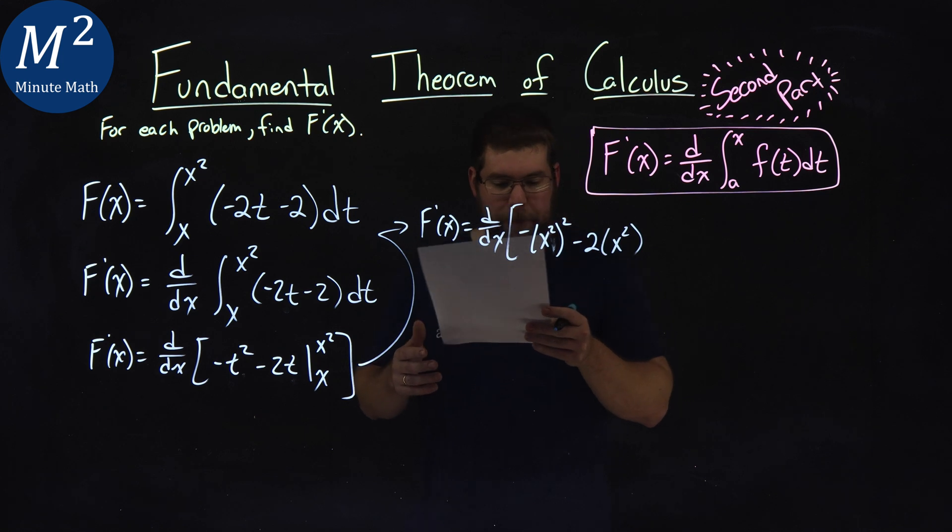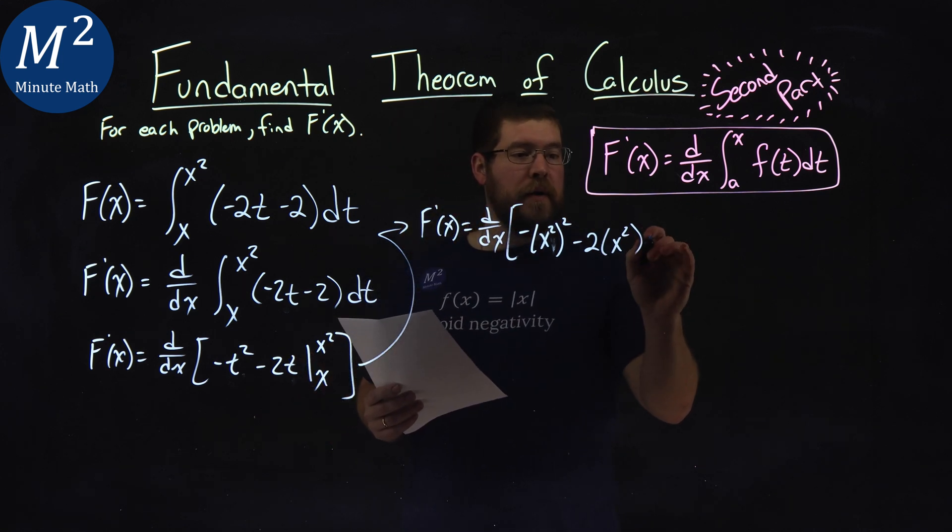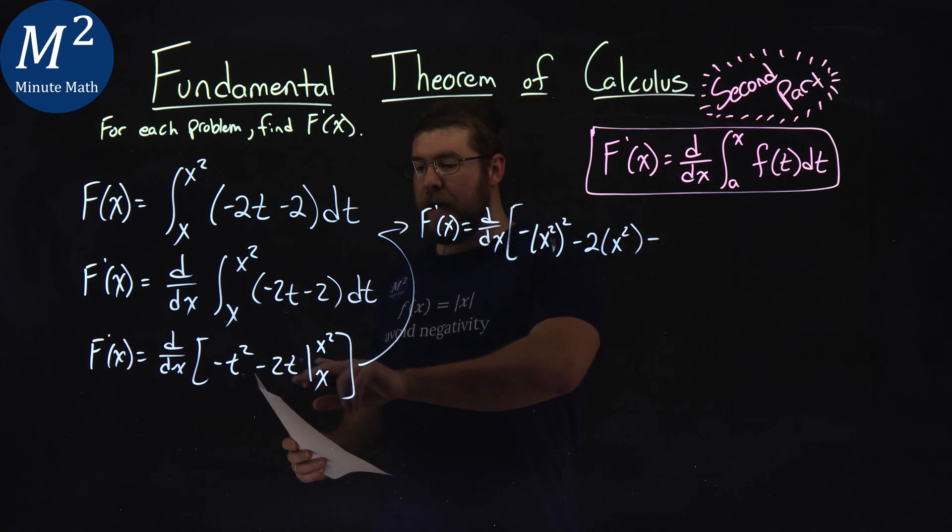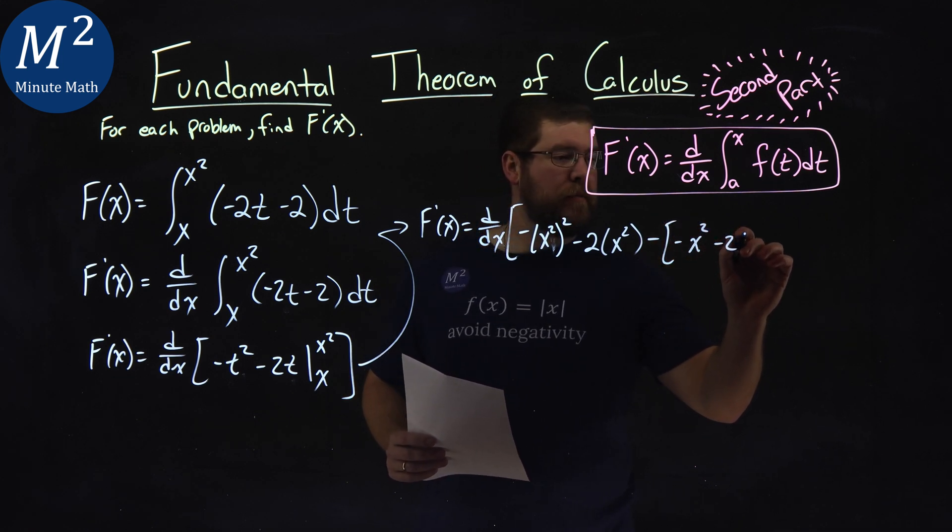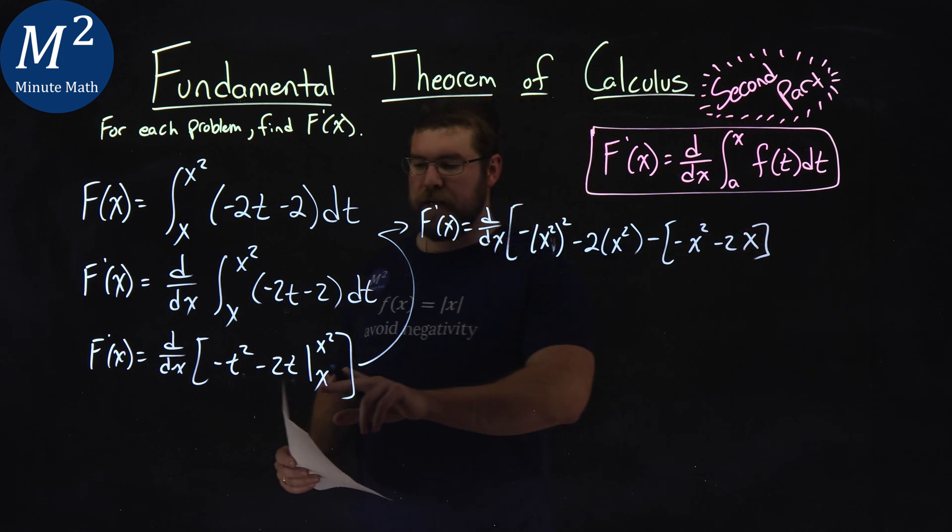Make sure I'm on the right track. Then we need to subtract that and we plug in x in for t. So we have negative x squared minus 2 times x.